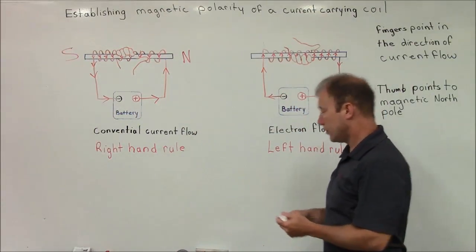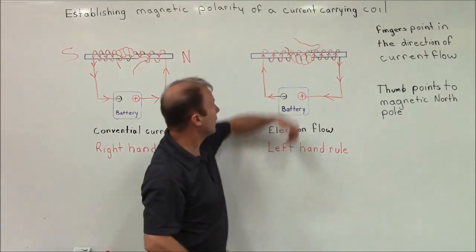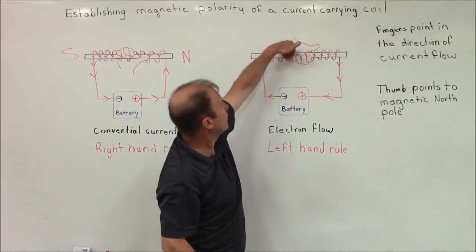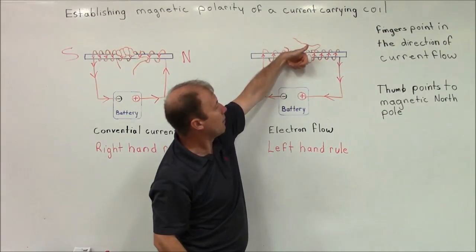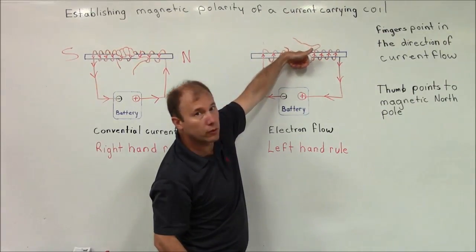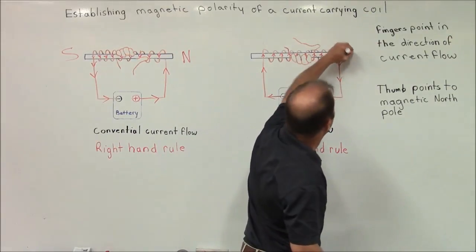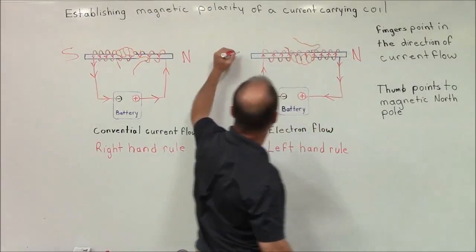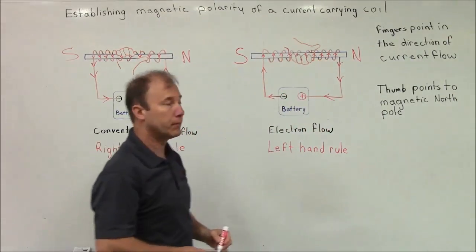Now using the electron flow, we're going to use the left hand rule. The fingers point in the direction of current flow and the thumb points to magnetic north. So again, this is the north pole and this is the south pole.